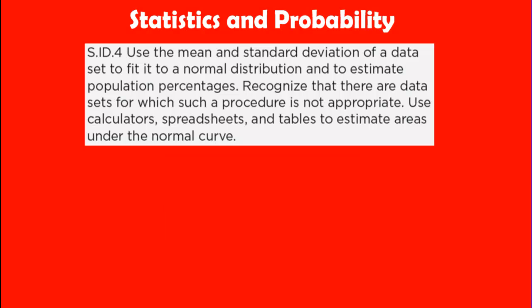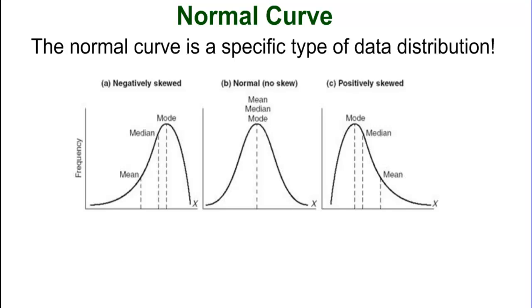Before we do anything, let's address the definition of the normal curve. The normal curve is a specific type of data distribution. Shown here, you see three different data distributions. The normal curve is the one in the middle. It is also known as the bell-shaped curve because it is in the shape of a bell.